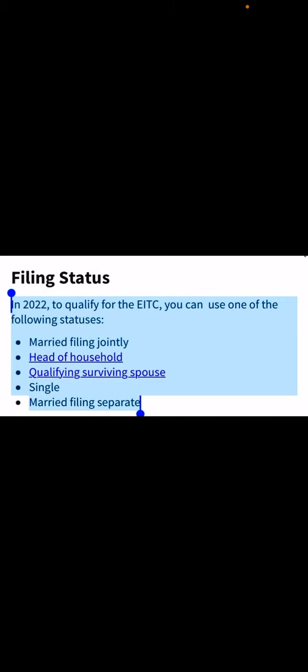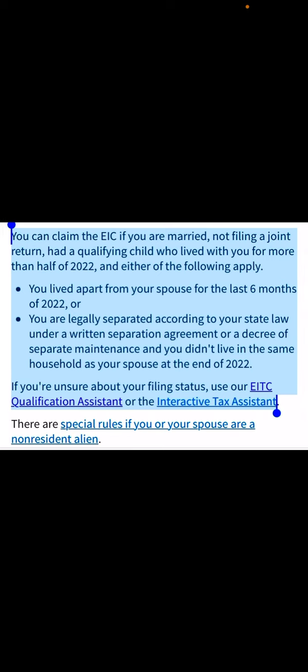The filing statuses you can use to claim the EITC are: married filing jointly, head of household, qualifying surviving spouse, single, and married filing separately. If you claim the EITC and you are married but not filing a joint return, and you had a qualifying child who lived with you for more than half of 2022, then either you lived apart from your spouse for the last six months of 2022, or you are legally separated according to your state law under a written separation agreement or a decree of separate maintenance and did not live in the same household as your spouse at the end of 2022.